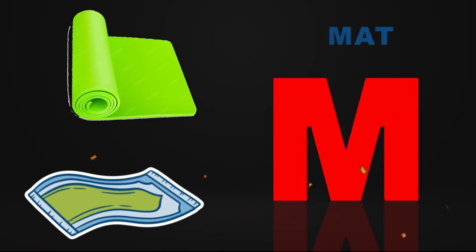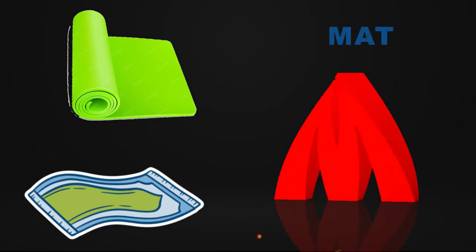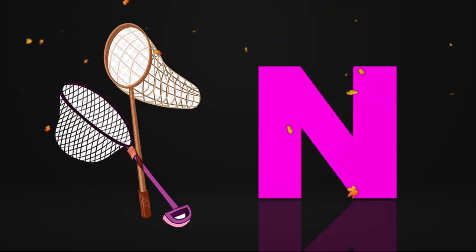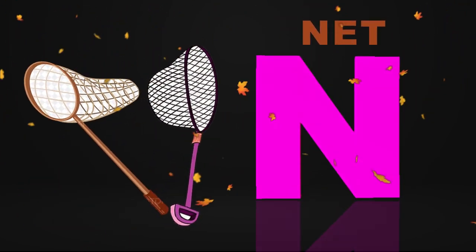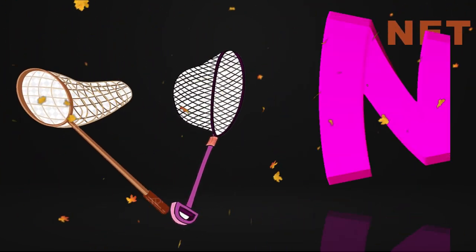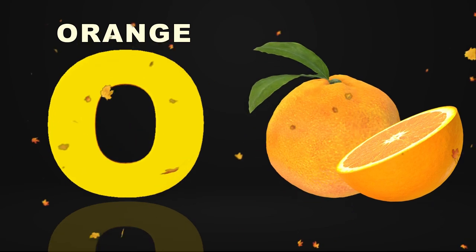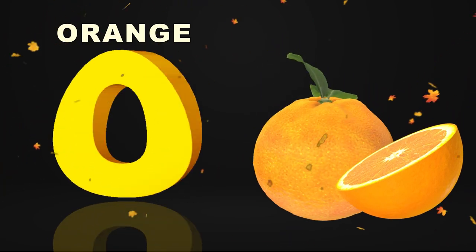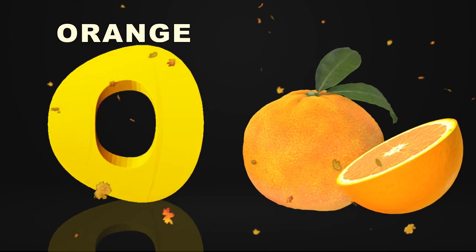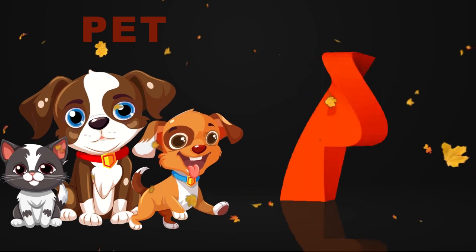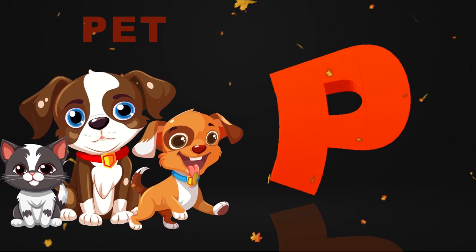M is for mat, m-m-mat. N is for net, n-n-net. O is for orange, o-o-orange. P is for pet, p-p-pet.